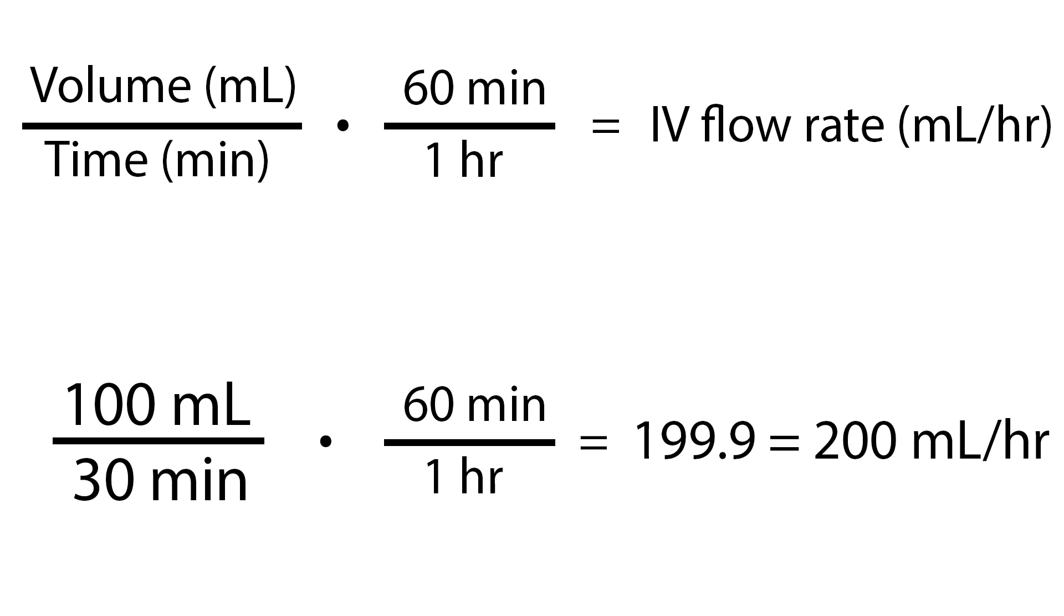If you need to set this up on an IV infusion pump, use the formula volume in mLs divided by the time in minutes, multiplied by 60 minutes over 1 hour. This equals the IV flow rate in mL per hour. Using this formula, 100 mL divided by 30 minutes times 60 minutes in 1 hour equals 199.9, rounded to 200 mL per hour.